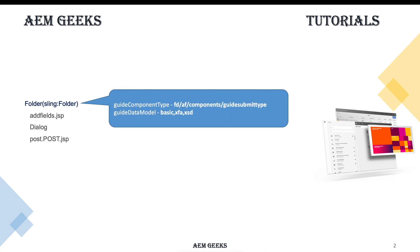Inside this folder you must have two mandatory properties. If you do not add them, your submit handler or form action won't be available in the submission section drop-down. You must add the guide component type — the value is always fixed. The other one is guide data model, which defines what kind of form this submission works with. If you define 'basic', it will work for manually created forms; if you define 'xfa' or 'xsd', it can be used for those form types as well.